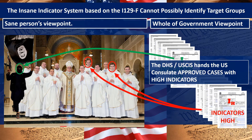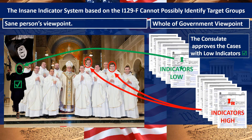Terrorists slip right through the system because they're among those who avoid indicators. Meanwhile, the clergy in our example — real people — have high indicators because real people have indicators. The result: the ISIS terrorist gets a big green check mark and comes right in, while real couples with high indicators may get denied at the interview stage.